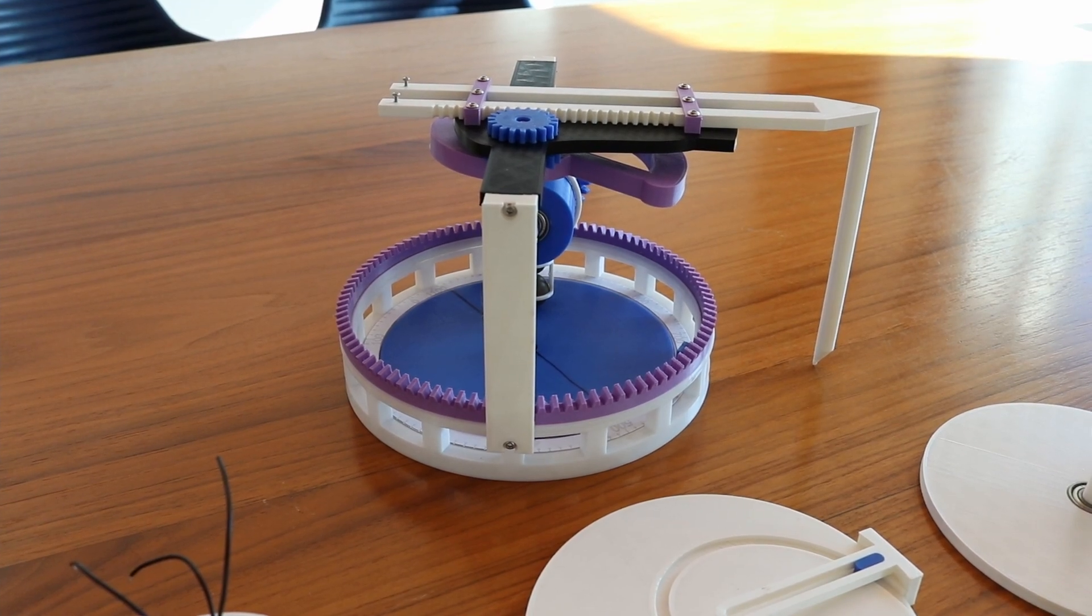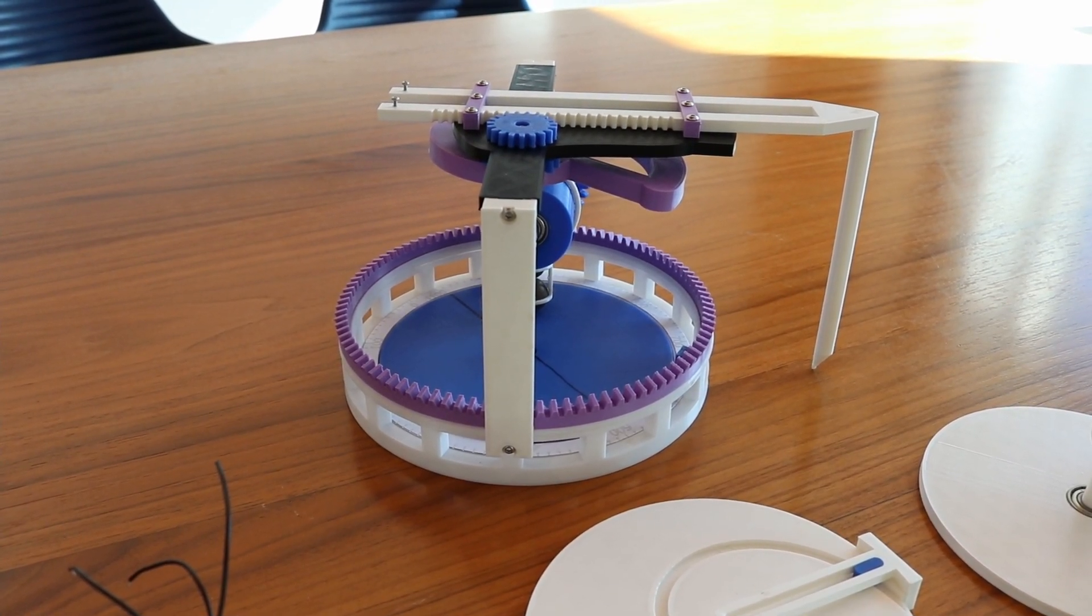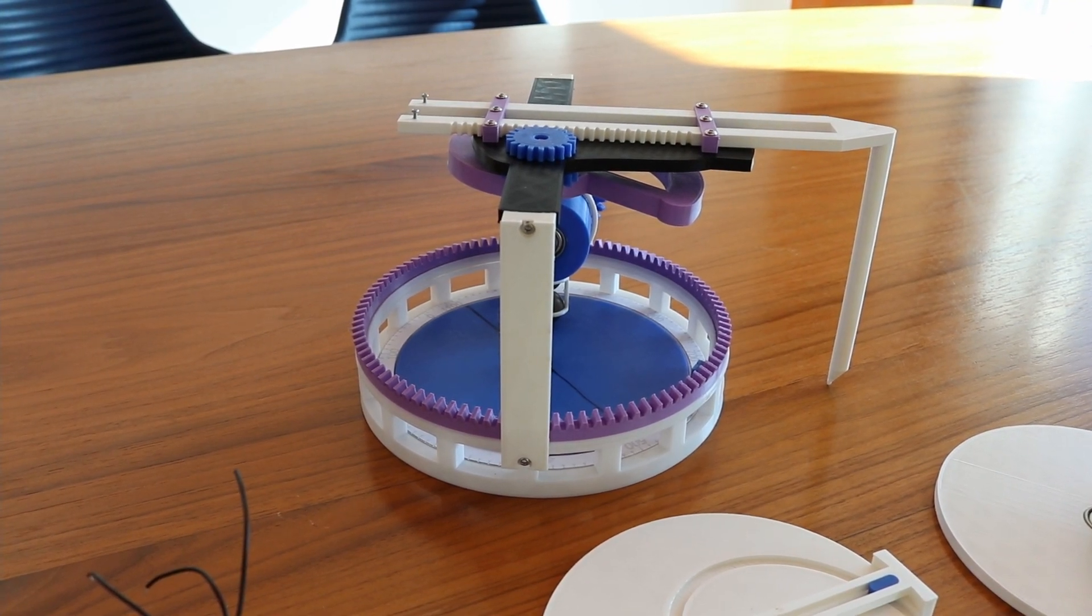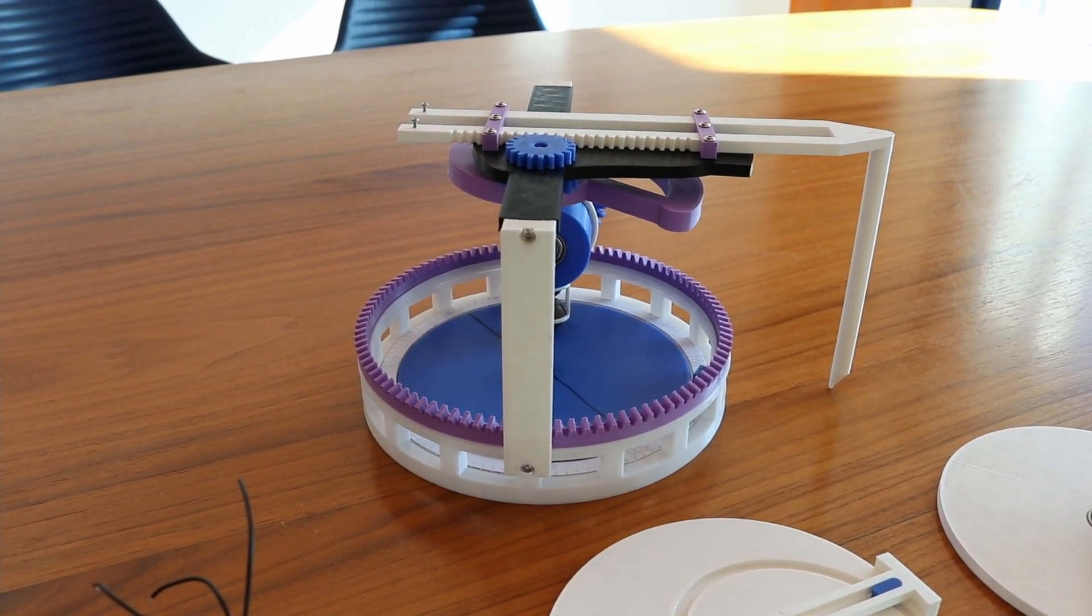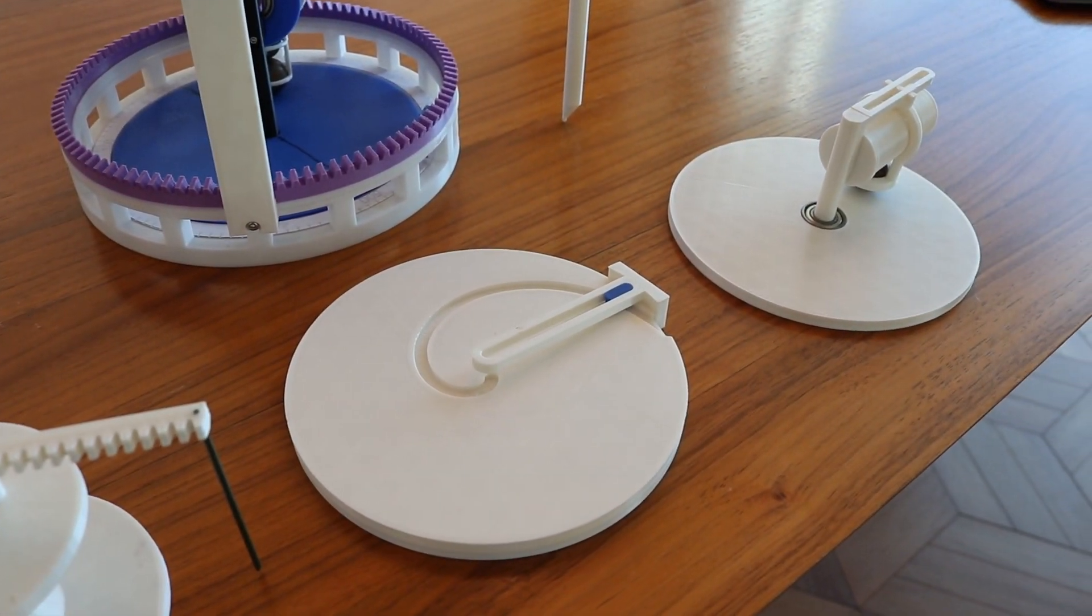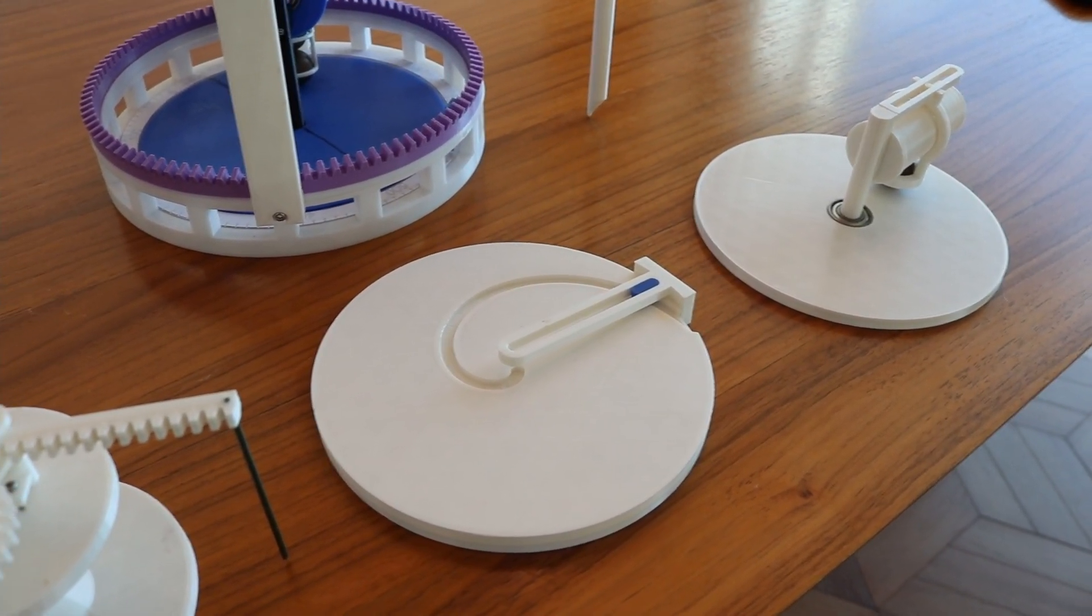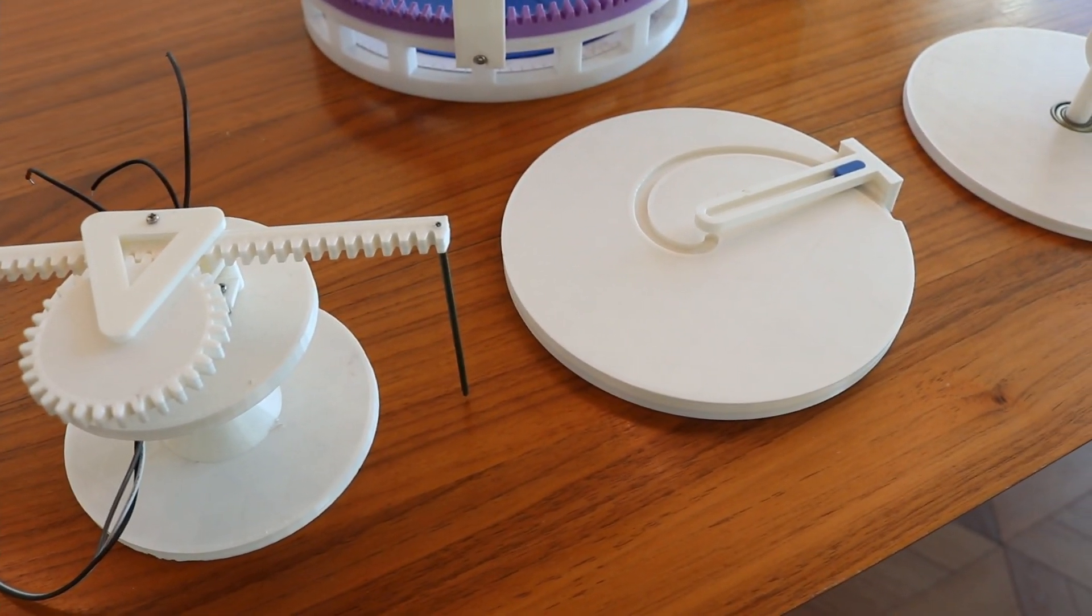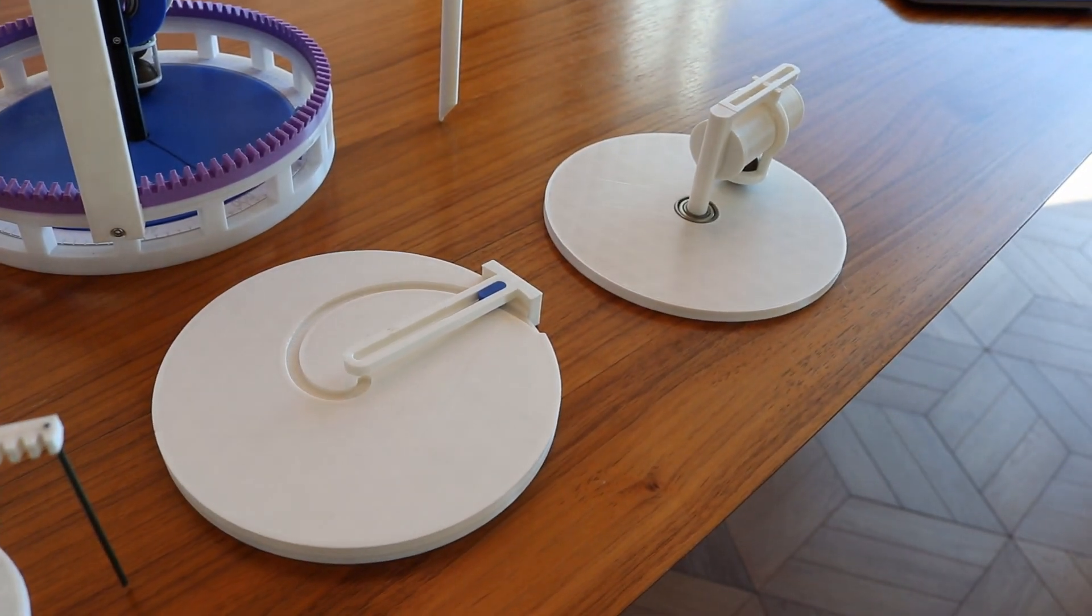The way this mechanism finds area is by using the equation for the area of a polar curve, which is the integral of 1 half r squared d theta, where theta is measured in radians. These three mechanisms, which are stacked on top of each other, essentially do the three parts of that equation. This mechanism finds the radius, this mechanism squares the radius, and this mechanism does the integration.